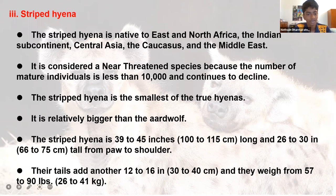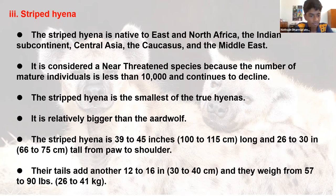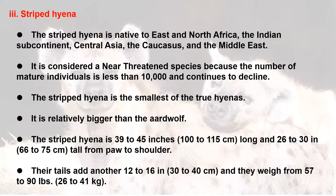The striped hyena is the smallest of the true hyenas, though it is relatively bigger than the aard wolf. It is 39 to 45 inches long and 26 to 30 inches tall from paw to shoulder. Their tails add another 12 to 16 inches, and they weigh from 57 to 90 pounds — that's 26 to 41 kilograms.